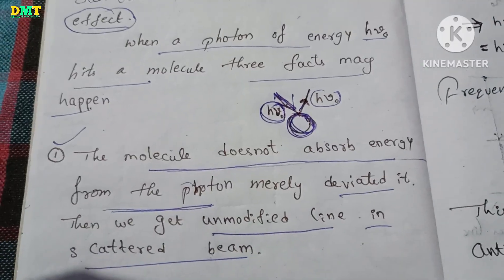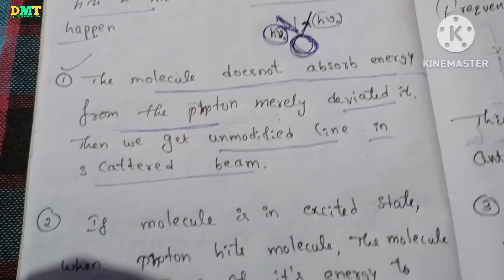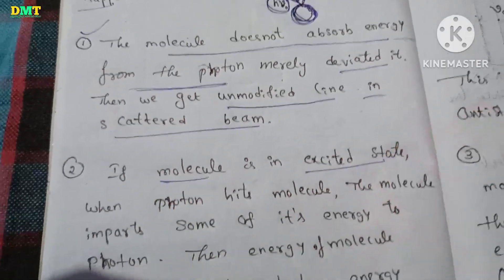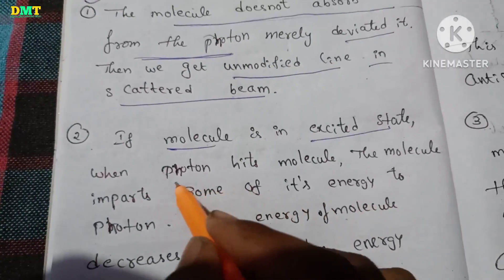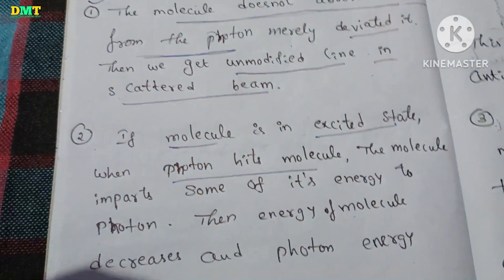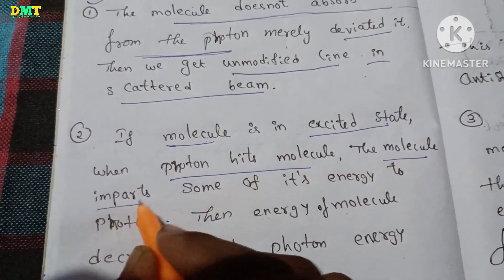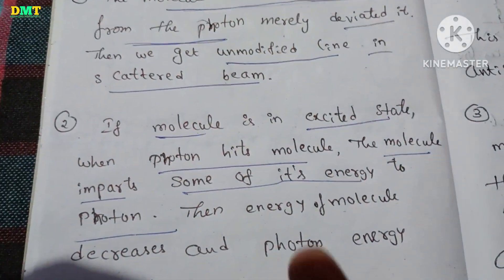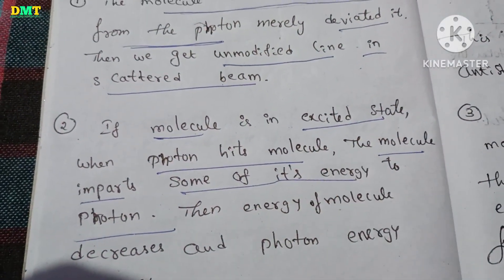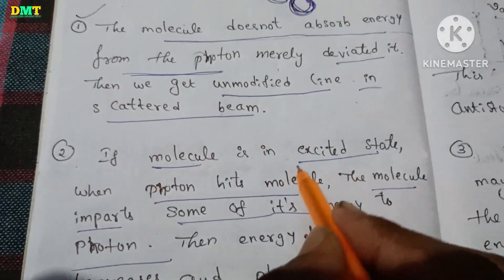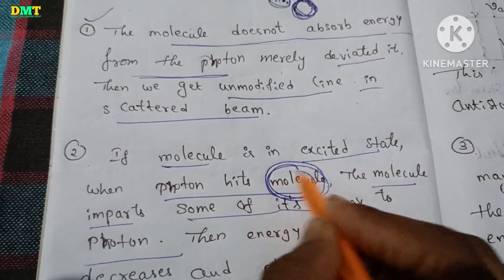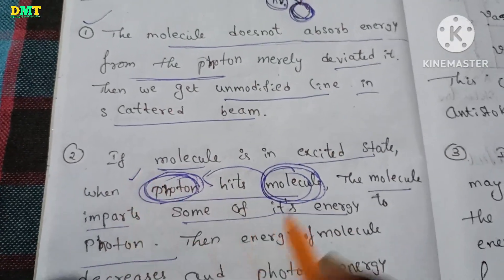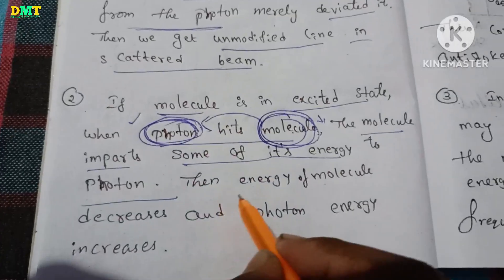The first point is: if the molecule is in the excited state — when the photon hits the molecule — the molecule imparts some of its energy to the photon.